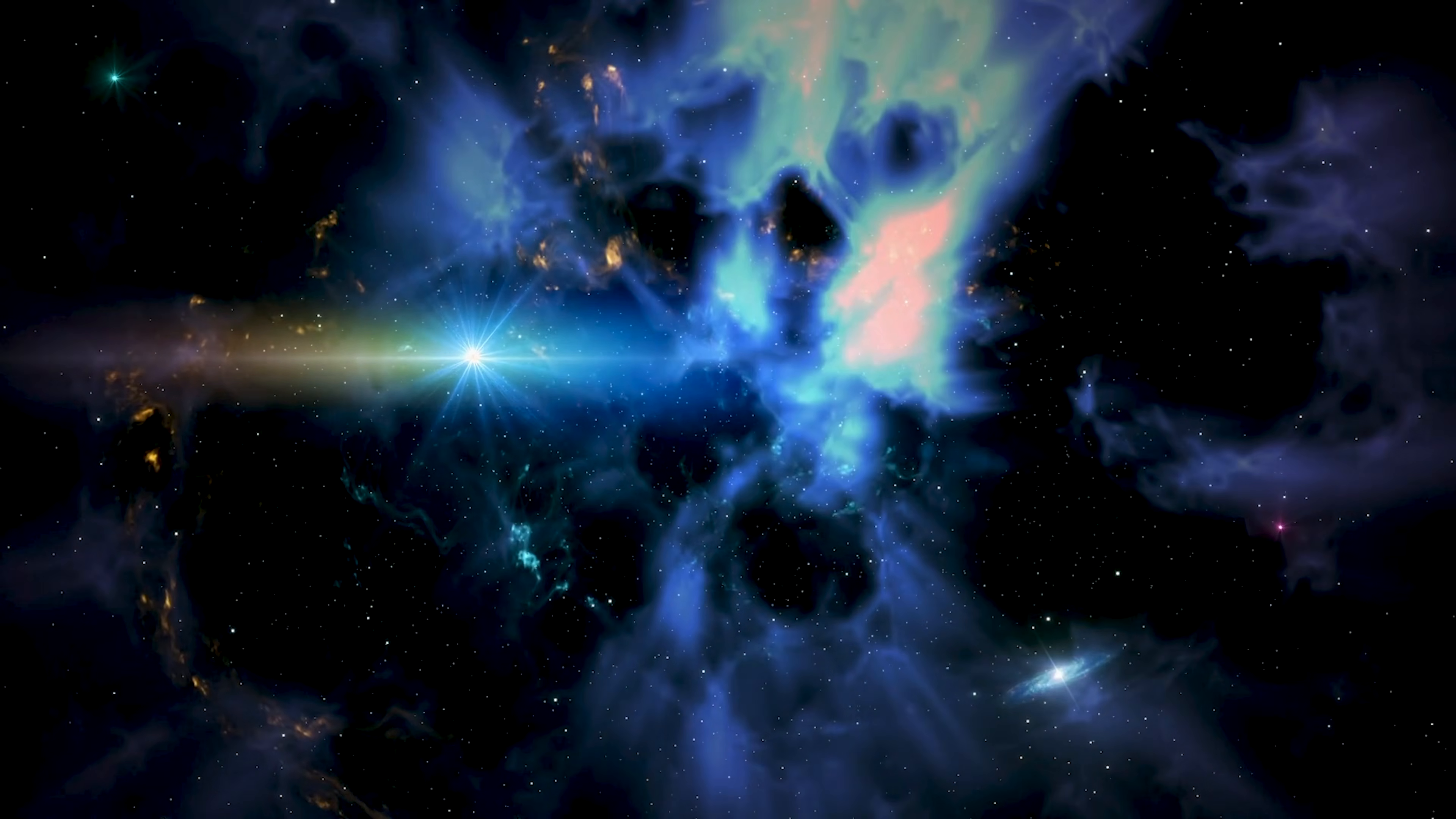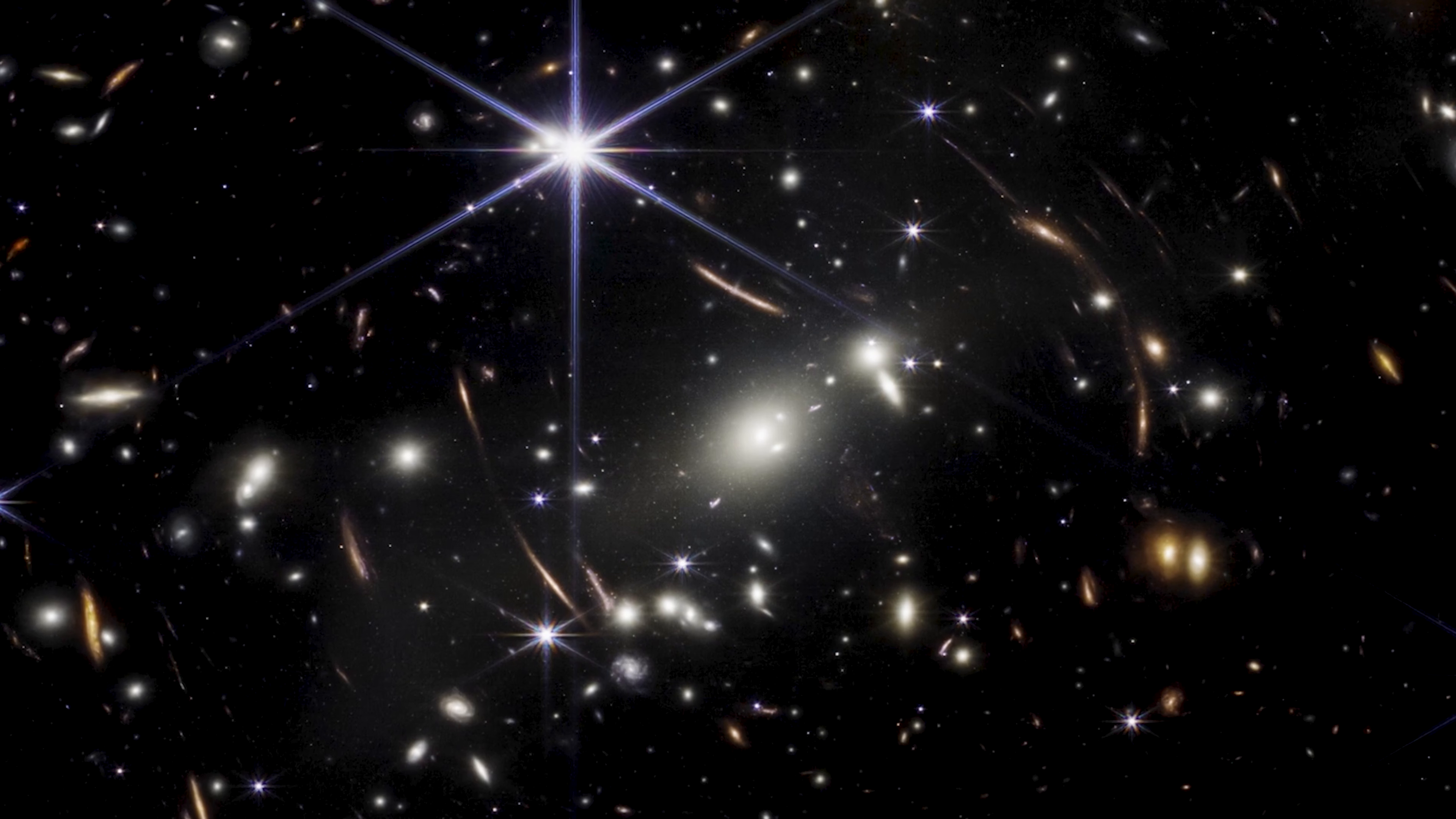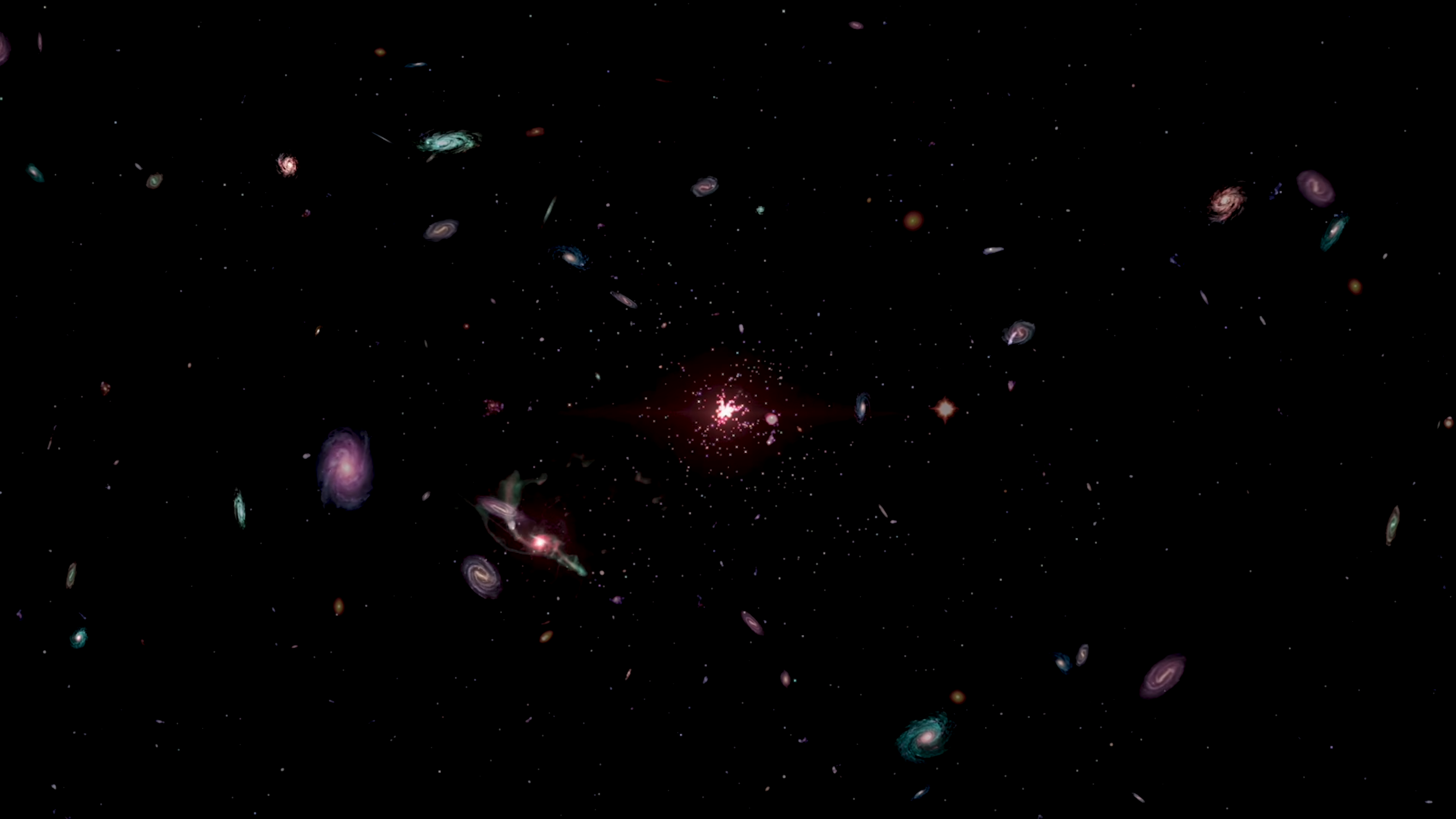What if part of what we're seeing is misleading, or even an illusion shaped by how we observe cosmic time and distance? That question became impossible to ignore with the discovery of a truly astonishing object. Deep Webb observations revealed an enormous disk galaxy existing far earlier in cosmic history than anyone thought possible. Its light has been traveling for more than 12 billion years to reach us. Researchers gave it a fitting name, the Big Wheel. This galaxy already existed within the first 2 billion years after the Big Bang, when the universe was only about 15% of its current age.